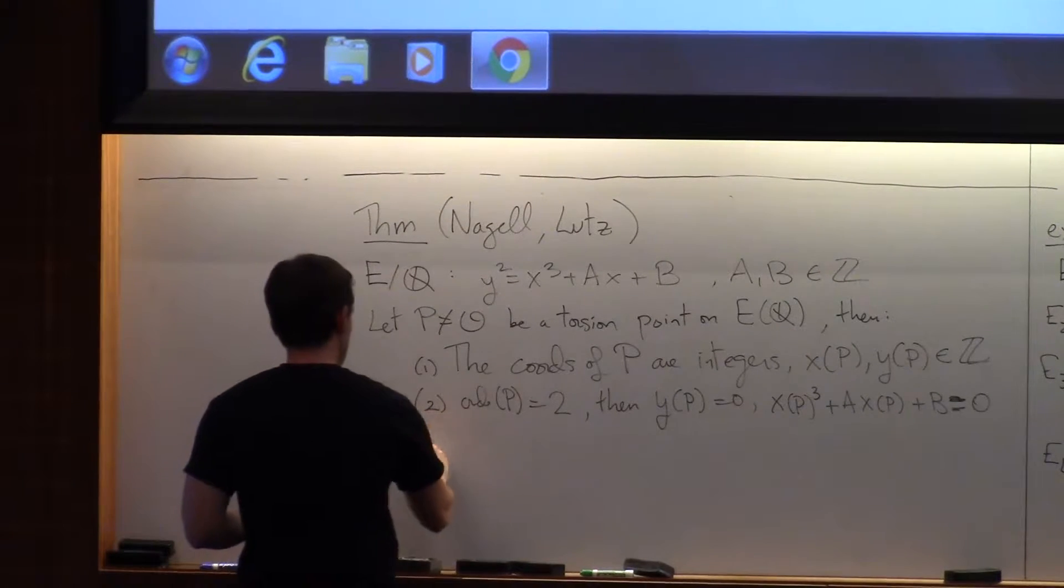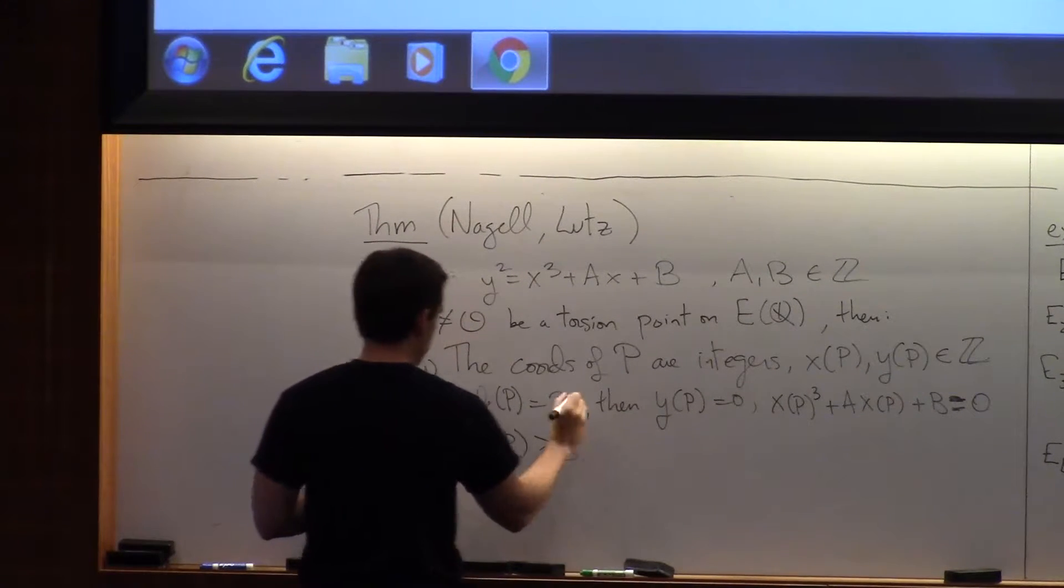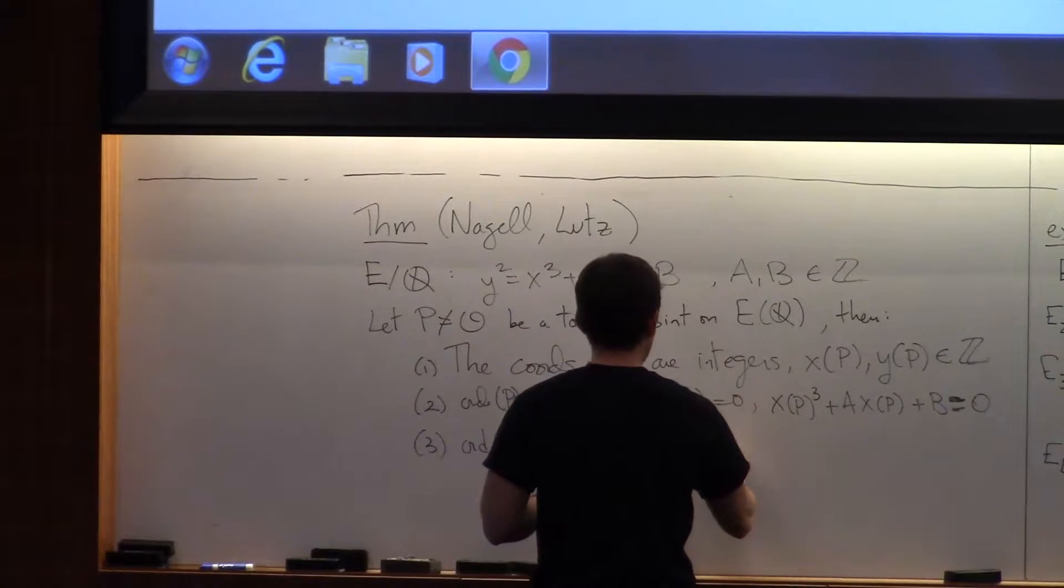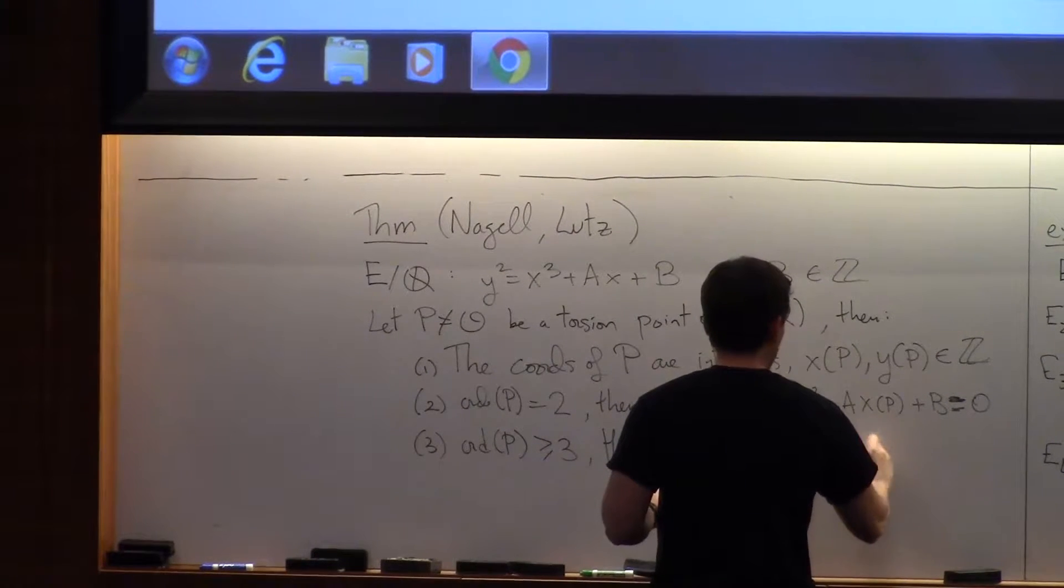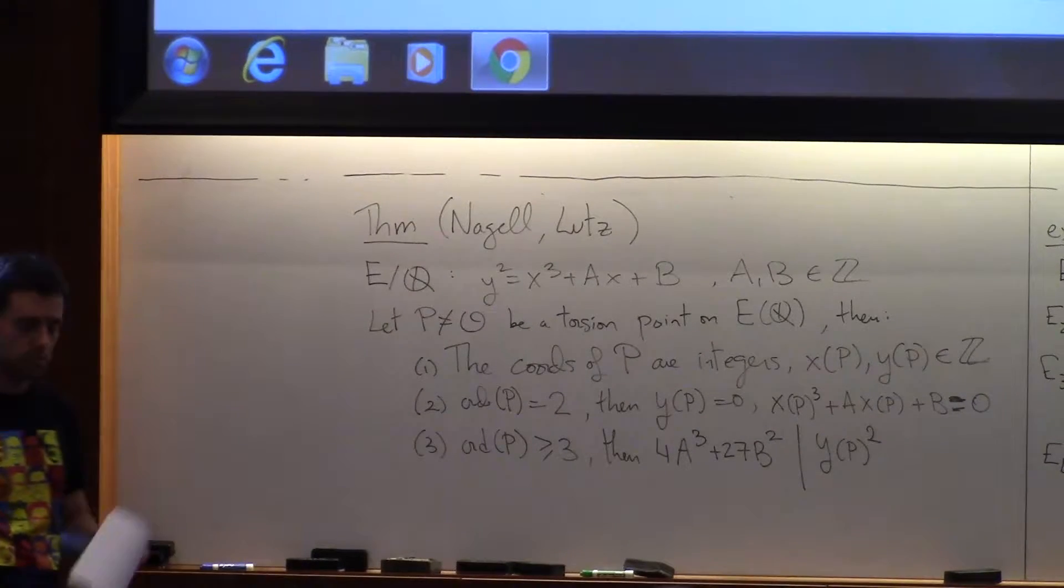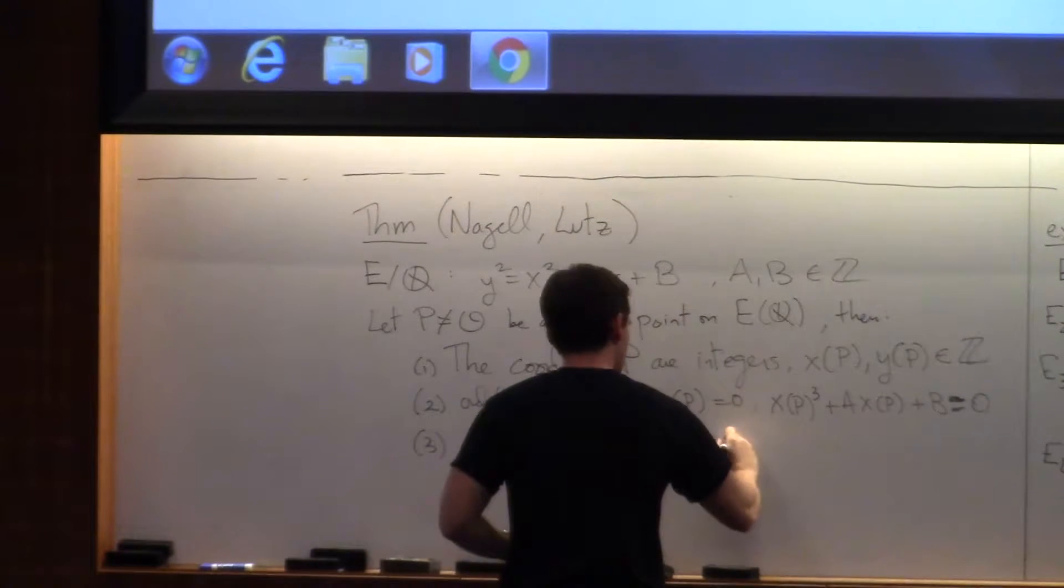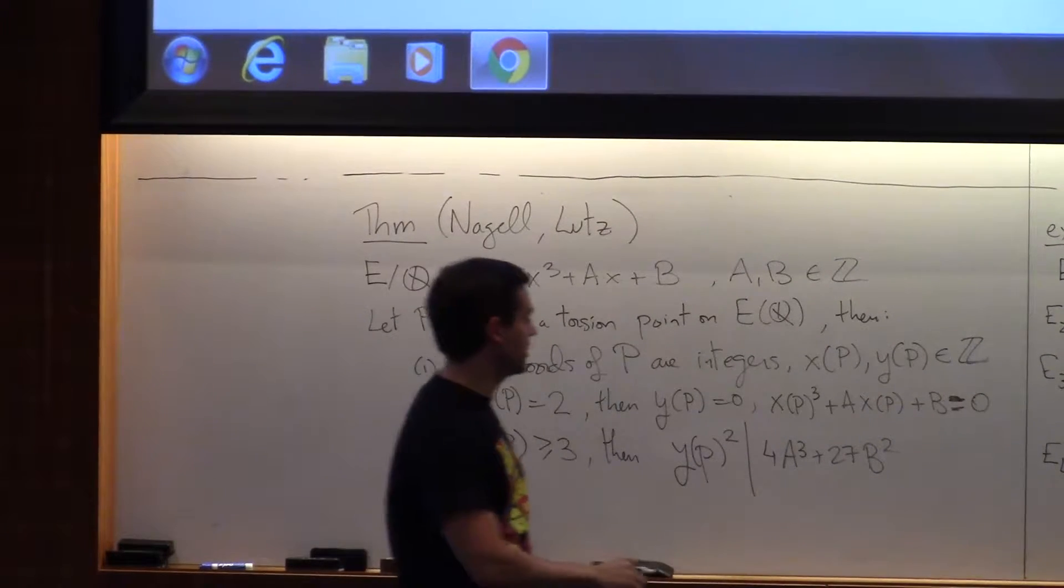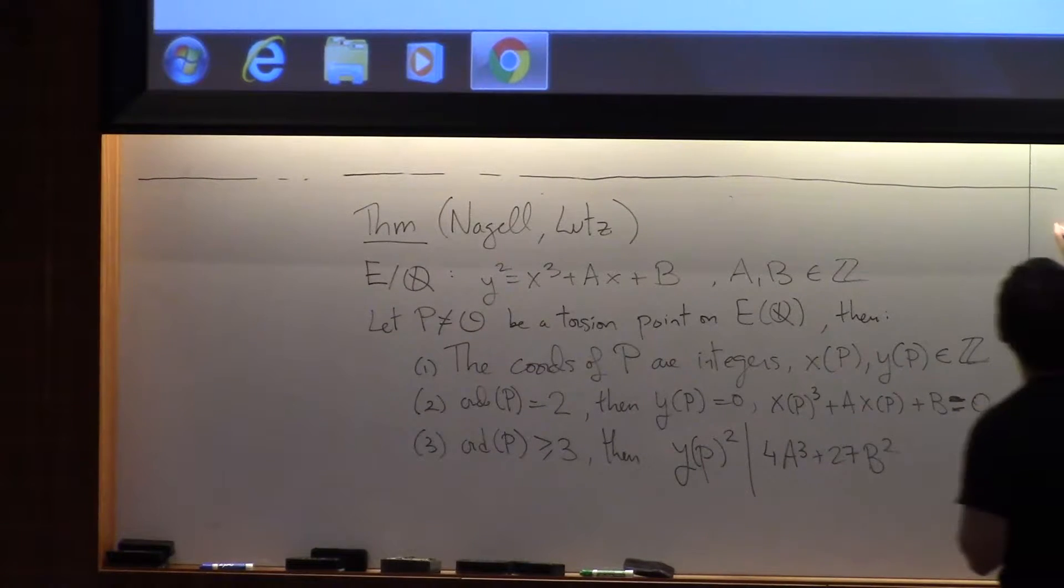But not only that, if the order is two, then those are easy to find because the y-coordinate is zero and the x-coordinate is a root of the polynomial in x. But for orders bigger than two, this theorem gives you everything you need. If the order is bigger than three, then the discriminant is divisible by the square of y.